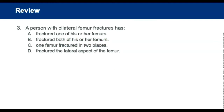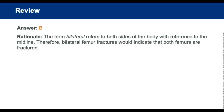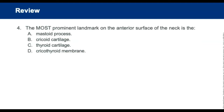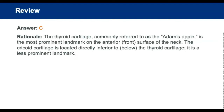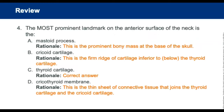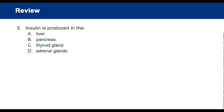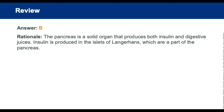A person with bilateral femur fractures has fractures on both femurs. The most prominent landmark on the anterior surface of the neck is the Adam's apple, also called the thyroid cartilage. Insulin is produced in the pancreas — a solid organ that produces insulin and digestive juices.